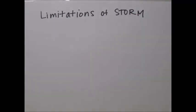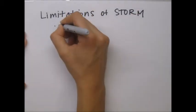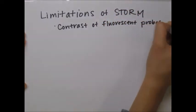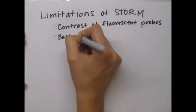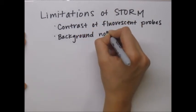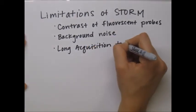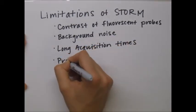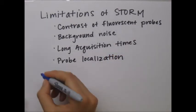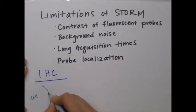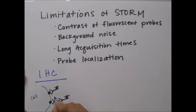Though STORM has significantly improved the potential resolution of optical microscopy, it is not without limitations. Limiting factors in STORM imaging typically include the contrast of fluorescent probes, background autofluorescence from the sample and surrounding fluorophores, long acquisition times since you must sacrifice temporal resolution for spatial resolution, and the accuracy of probe localization. For instance, immunohistochemistry is generally incompatible with STORM since antibody binding distances the fluorescent probes from the molecule of interest, often by up to 20 nanometers.